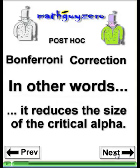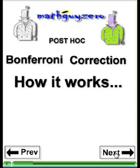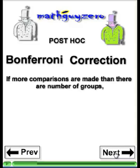What it does is it reduces the size of your critical alpha. Your critical alpha is normally 0.05, and if your probability value from all your calculations and test statistics is less than 0.05, then you're going to reject the null. So what this does is it changes that critical alpha.